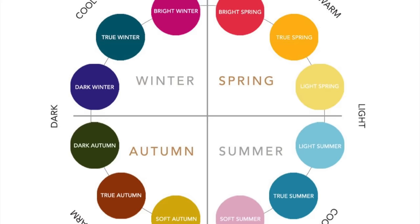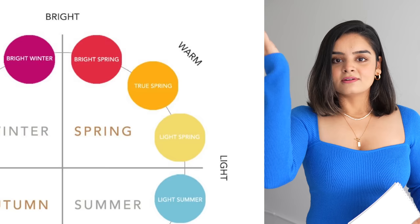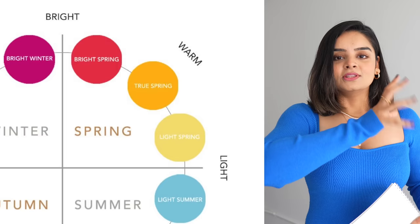Let me give you one more example. Let's zoom in on spring. On the top we have bright, on the right we have light, so the first season is bright spring. In the center, we have true spring. And on the bottom, we have the combination of light and spring — light spring. It's as simple as that.